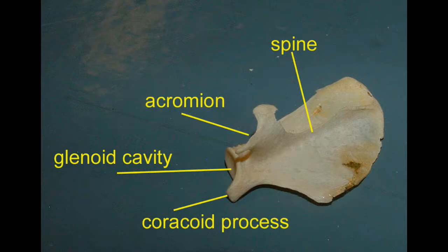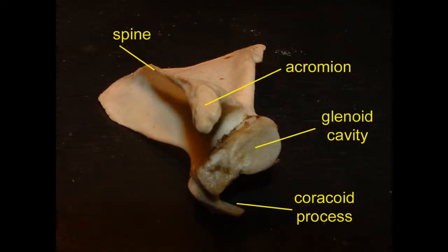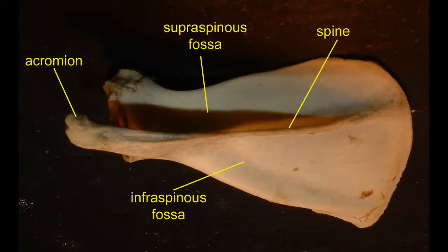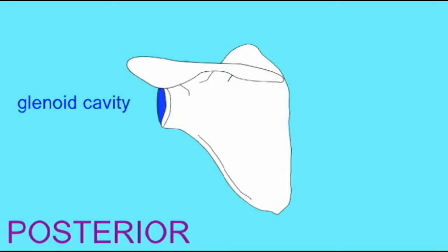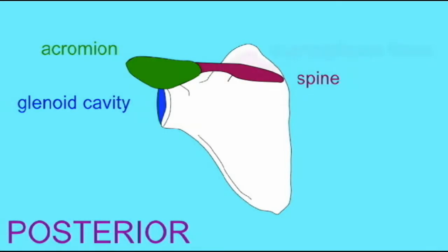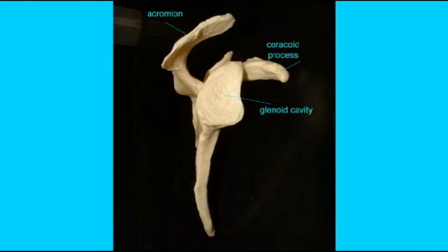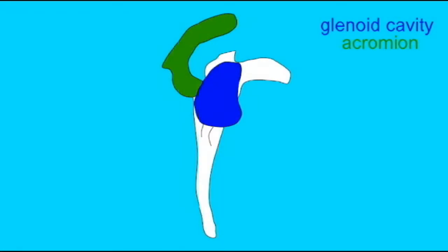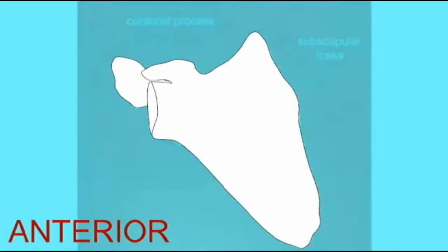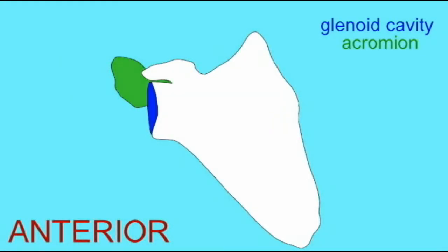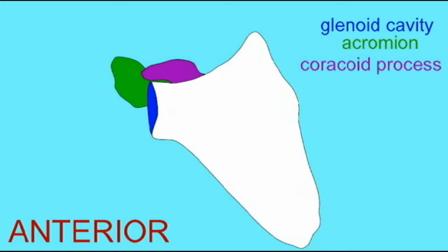One can observe the same structures in the scapula of a mink, and the same in the monkey, and these areas are retained in the human scapula as well. Therian mammals possess similar pectoral girdles, although the clavicle can vary, being reduced in some, but being retained in primates, which require it for hanging. The major regions of the scapula are shared among Therian mammals.